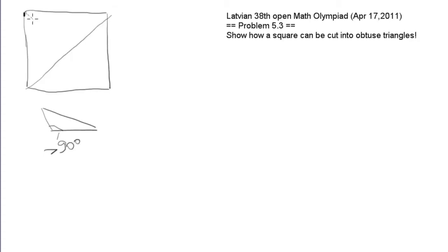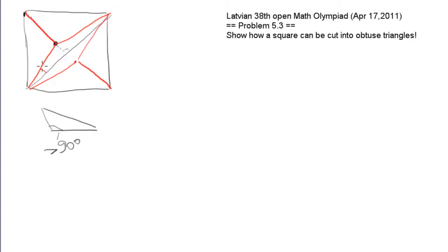Then I draw this axis of symmetry, or height, and I pick any point on it. Now we simply connect this point with all the vertices of the enclosing triangle and do a similar construction on the other side. Notice that this picture is symmetric, so one angle is epsilon and the corresponding angle is also epsilon. Therefore both angles on this side and the other side are 90 degrees plus epsilon.